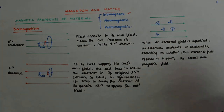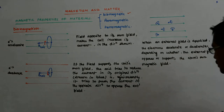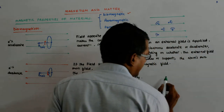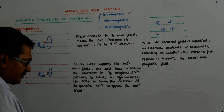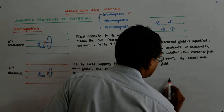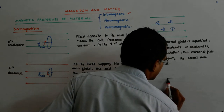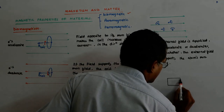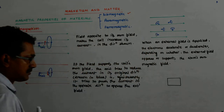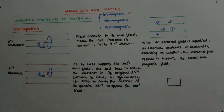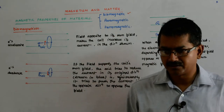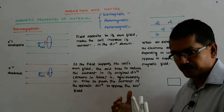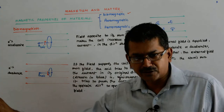So in the net, I am opposing the external field. Say, this is my material. It is opposite to the direction of the magnetic field. Opposite to the direction of the magnetic field — so it responds by actually opposing you.